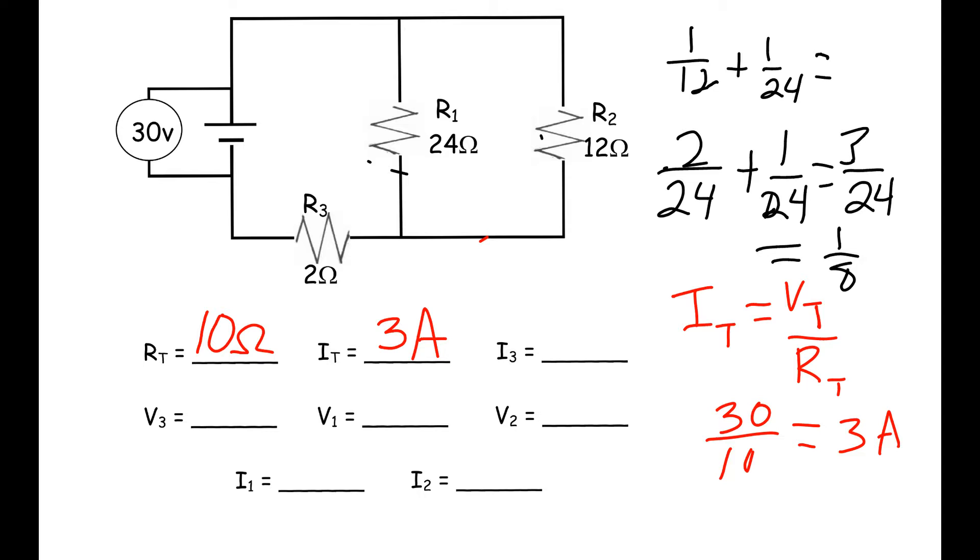Now look here. Notice that R3 is after the branching. We have the current coming out of the battery, we have branching right here, and then the branching comes back together. Because this is outside the branching, it's also equal to our total. So our I3 would also be 3 amps.